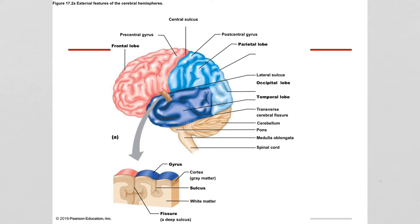Within these lobes, we see bumps — this is just a little section taken out of this area — and the bumps are called a gyrus, or gyri. We also see kind of crevices. If it's a shallow crevice, it's called a sulcus, and if it's a deep crevice, it's called a fissure.